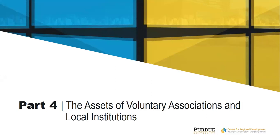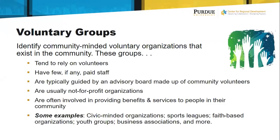The next area is voluntary associations and local institutions. Let me walk you through each of these. Voluntary groups are community-minded organizations that exist in the community, and they have certain attributes: they rely pretty much on volunteers, they may have paid staff in some cases, they are typically guided by some type of advisory committee or board made up of community residents and volunteers. They tend to be not-for-profit organizations, and they typically provide benefits and services to people in their community. Some examples are your civic-minded organizations like Jaycees and Rotary, sports leagues that provide positive activities for kids, faith-based organizations, youth groups, and business associations — voluntary groups that are really doing things that benefit the community, both directly and indirectly.